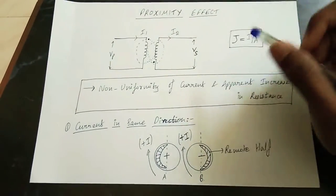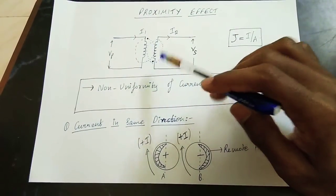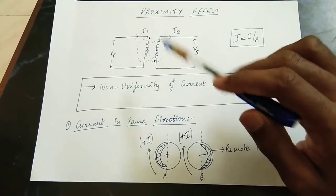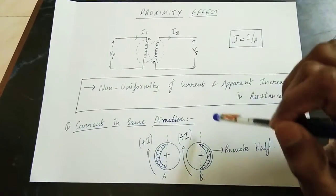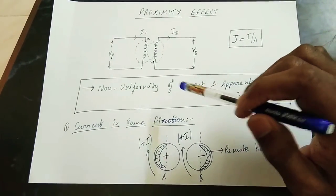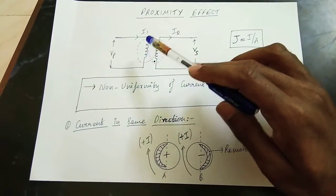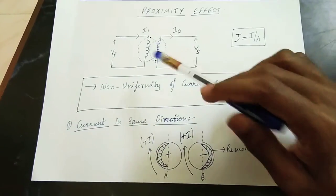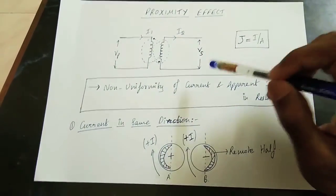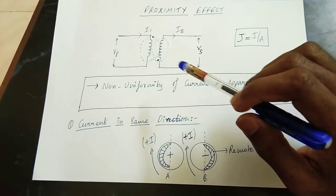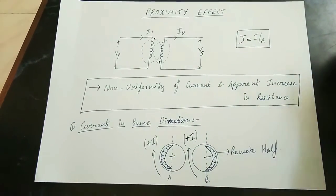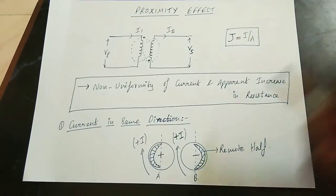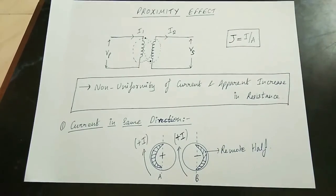There is a direct current and alternating current. That is why the resultant flux is coming. The current is coming — whether the current in one conductor and the current in another conductor is in the same direction or opposite direction. If the current is in the same direction, the proximity effect causes non-uniformity of current and an apparent increase in resistance.